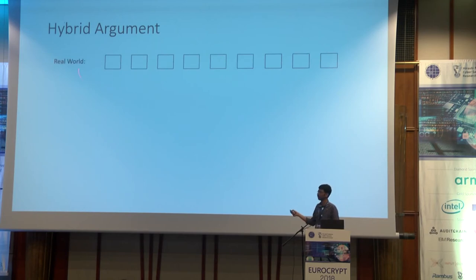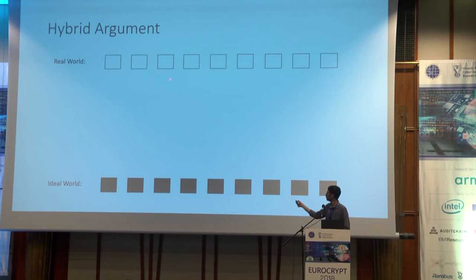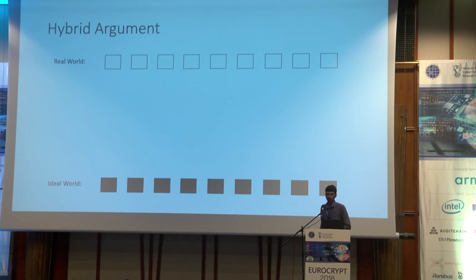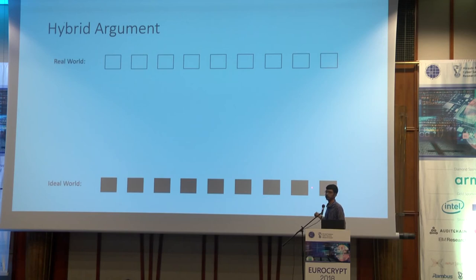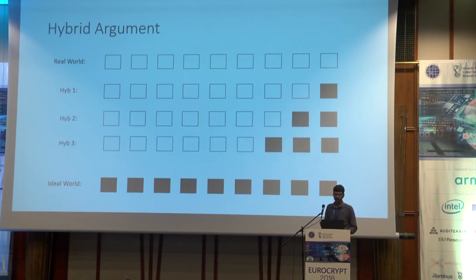In the real world, every step circuit is generated honestly — denoted by a white box. In the ideal world, every step circuit is a dummy — denoted by a black box. We need to go from the all-whites distribution to the all-blacks distribution. Rather than changing step circuits from first to last, we follow an unusual approach: we first change the last step circuit to black, then the second-to-last, and so on. This is reminiscent of the work of KLW on succinct indistinguishability obfuscation.